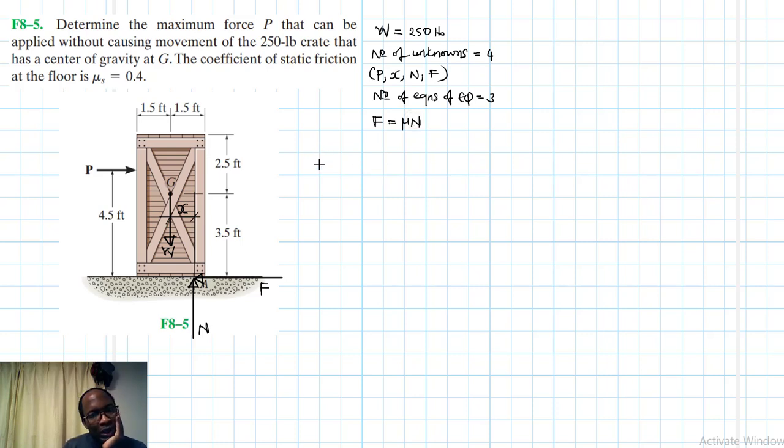So now let's start applying our equations of equilibrium. Summation of forces in the X equal to 0. What do we have? We have P minus F equal to 0. And we know that F is equal to mu N. And our mu s equals mu s times N. Mu s is 0.4. Therefore, this becomes equal to 0.4 N.